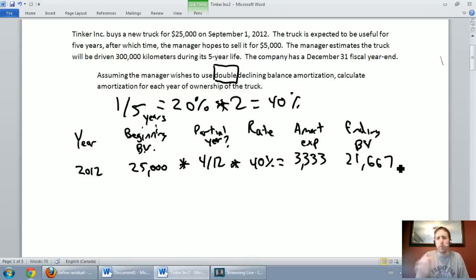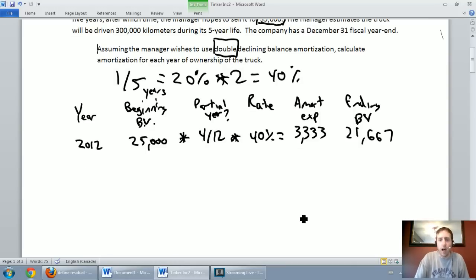You might be asking yourself, what about that $5,000 residual value that we've been worried about? The $5,000 residual value isn't going to come into play until the very end. When we finish this question, I need to remind myself I've got to stop when I get to a $5,000 residual value. I can't amortize past that. I have to end on that $5,000 number. But we'll worry about that later.